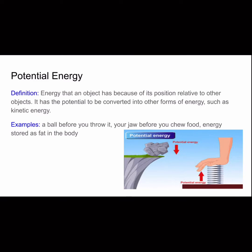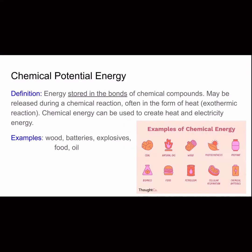Potential energy is energy that an object has because of its position relative to other objects. It has the potential to be converted into other forms of energy, such as kinetic. So potential energy is when something isn't moving yet but is about to start moving — that potential turns into kinetic. Examples include a ball right before you throw it, your jaw right before you start chewing food, and energy stored as fat in the body.